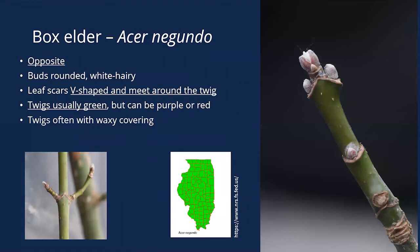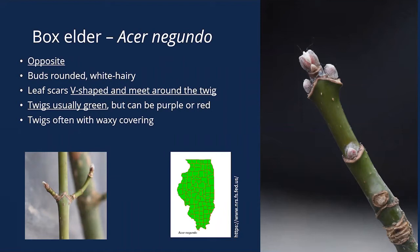Box elder is one of our most common maples, found across the whole state. It's oppositely arranged — two buds across from each other. The buds are rounded and often white with a white fuzz or hairiness that really stands out. At each bud location, the leaf scar from the left bud meets the leaf scar from the right bud, forming a distinctive V-shape that's recognizable even on the small branches.